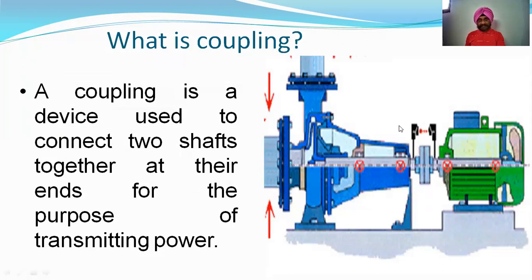Coupling is a device used to connect two shafts together at their ends for the purpose of transmitting power. That is what coupling is — a connection between two shafts.